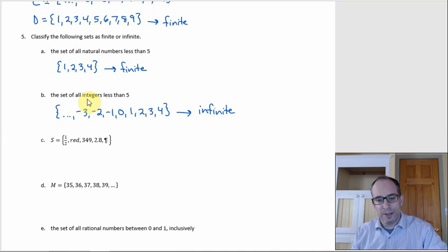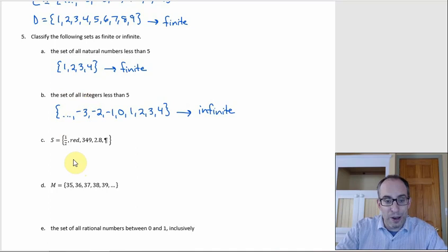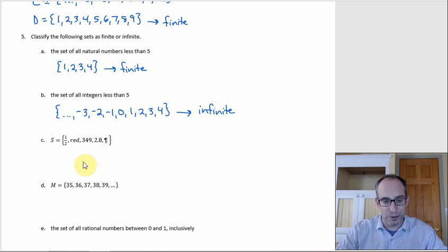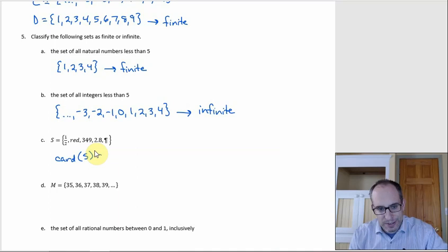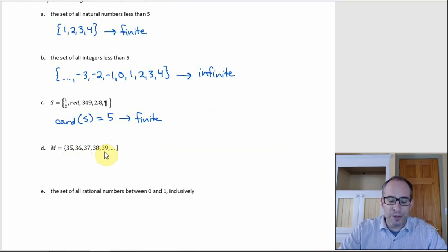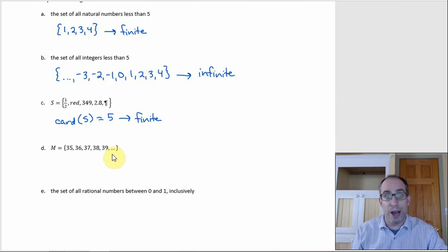Set C contains an integer, a decimal, a fraction, a color, and a paragraph symbol — called a pilcrow. Together that's just five elements, so the cardinality of S is 5 and it's finite. Set D starts with 35, 36, 37, 38, 39 followed by an ellipsis — meaning 40, 41, 42, 43 and so forth keep going with no upper bound, making it infinite.